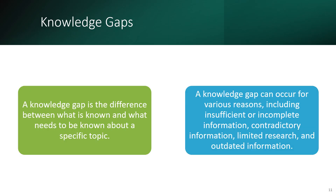The last type of research gap is the knowledge gap. A knowledge gap is the difference between what is known and what is yet to be known about a specific topic. It can occur for various reasons, including insufficient or incomplete information, contradictory information, limited research, and outdated information. Whenever there are inconsistencies in the results of previous studies — for example, study A finds a positive result, study B a negative result, and study C is inconclusive — that situation is referred to as a knowledge gap.